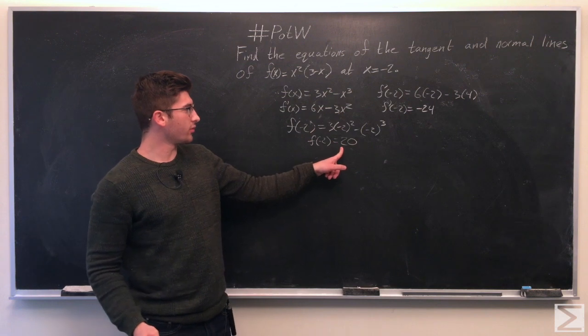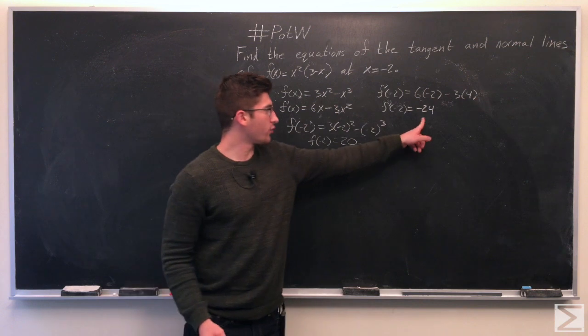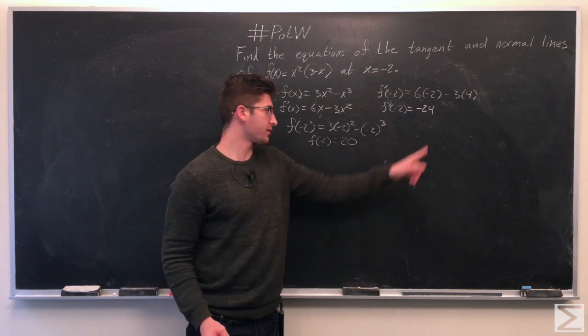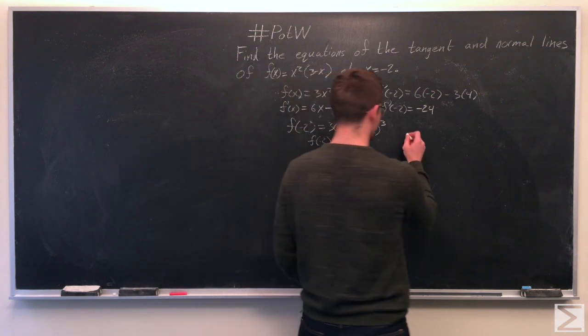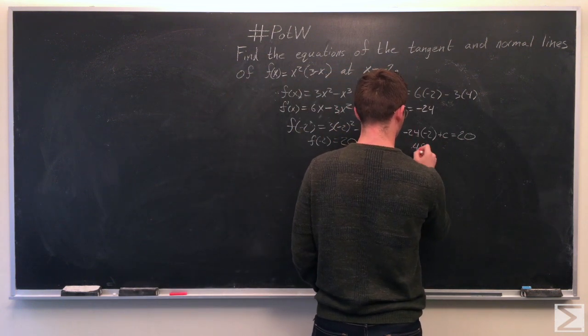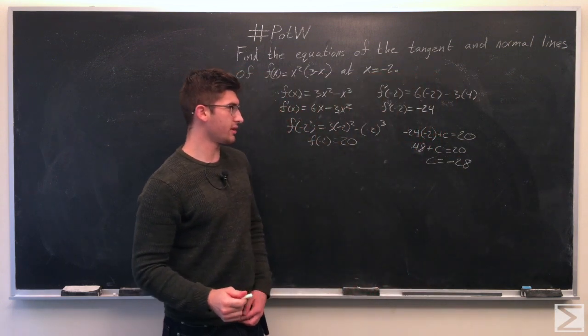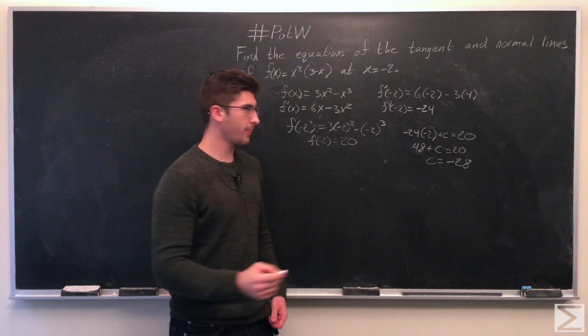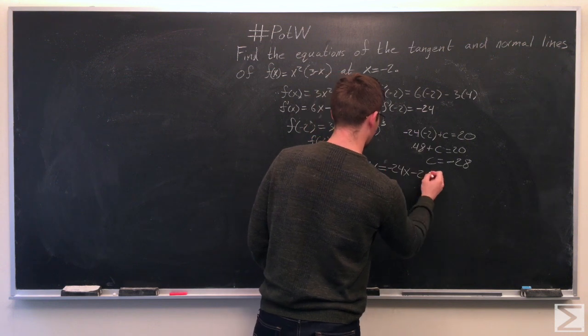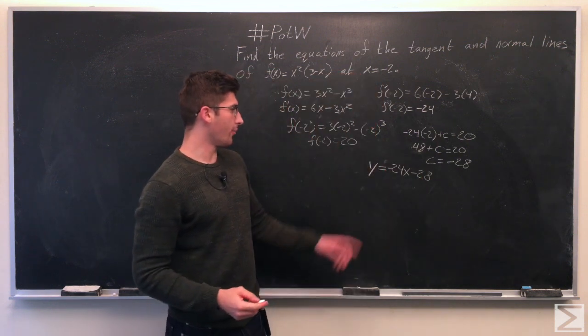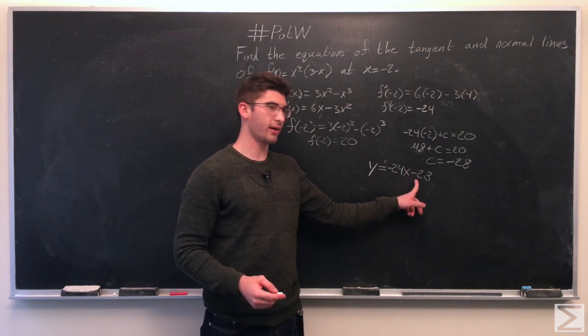So now we need to solve for negative 24x plus c equals 20. We need to solve for c. And then we get that c equals negative 28. So the equation of our tangent line is y equals negative 24x minus 28.